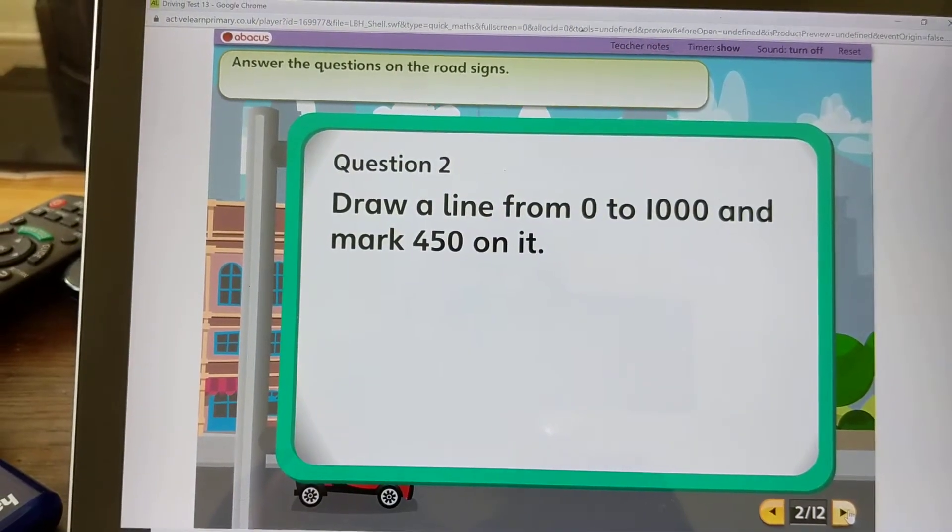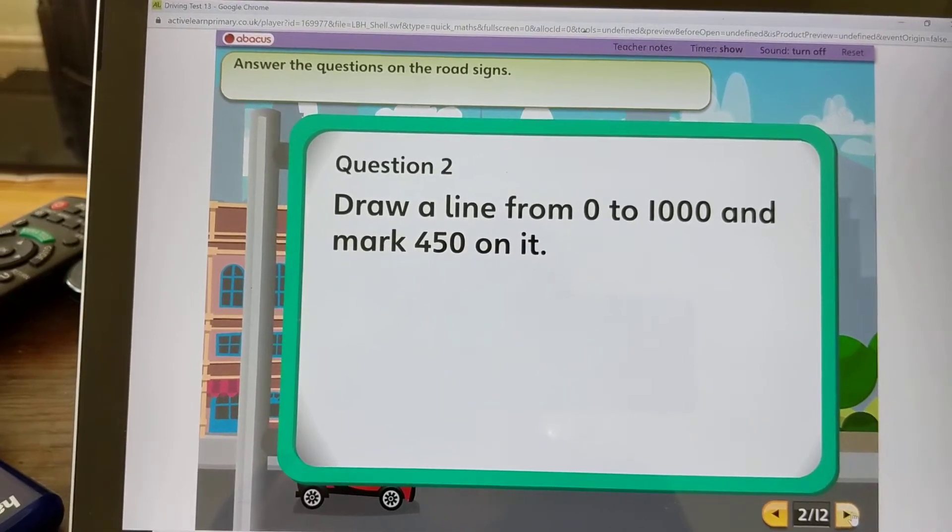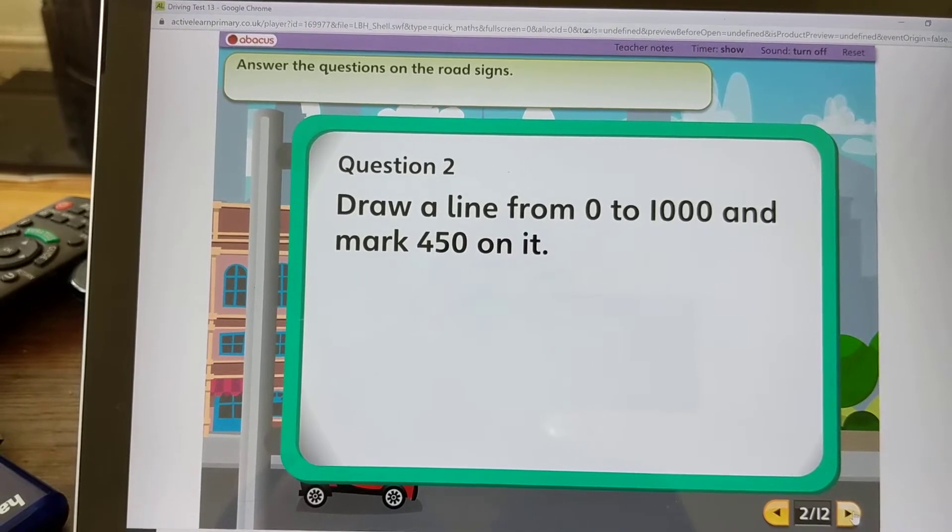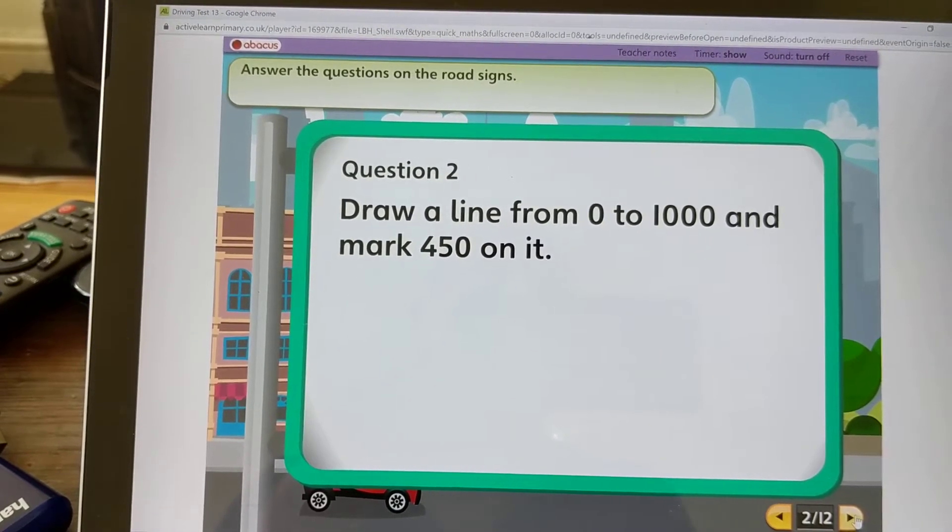Question 2: In your book, draw a line from 0 to 1000 and mark 450 on it. Think of where the middle would be for 500. Again, pause it if you need more time.